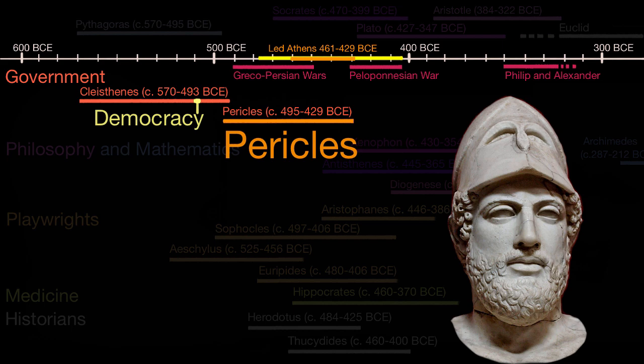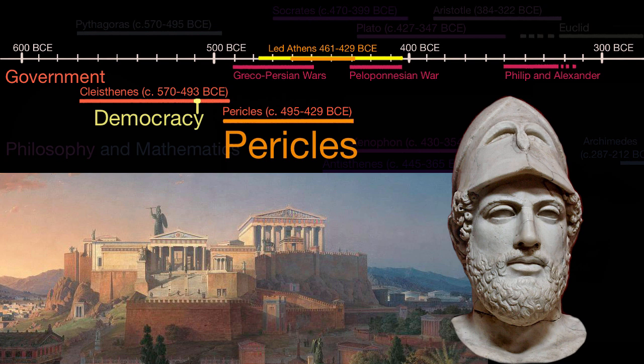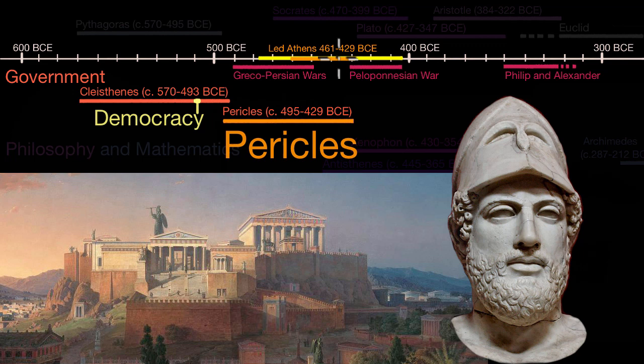Pericles was an orator, a statesman, and a general. In this period — often known as the age of Pericles — he helped Athens invest significantly in the arts and in architecture. Some of the most iconic structures we now associate with ancient Greece were built during his time. Here you have a picture of the Acropolis, this rock outcropping which still exists in Athens, as it likely looked during the time of Pericles. In particular, the most famous structure, the Parthenon — a lot of which still stands today — was constructed under the rule of Pericles.